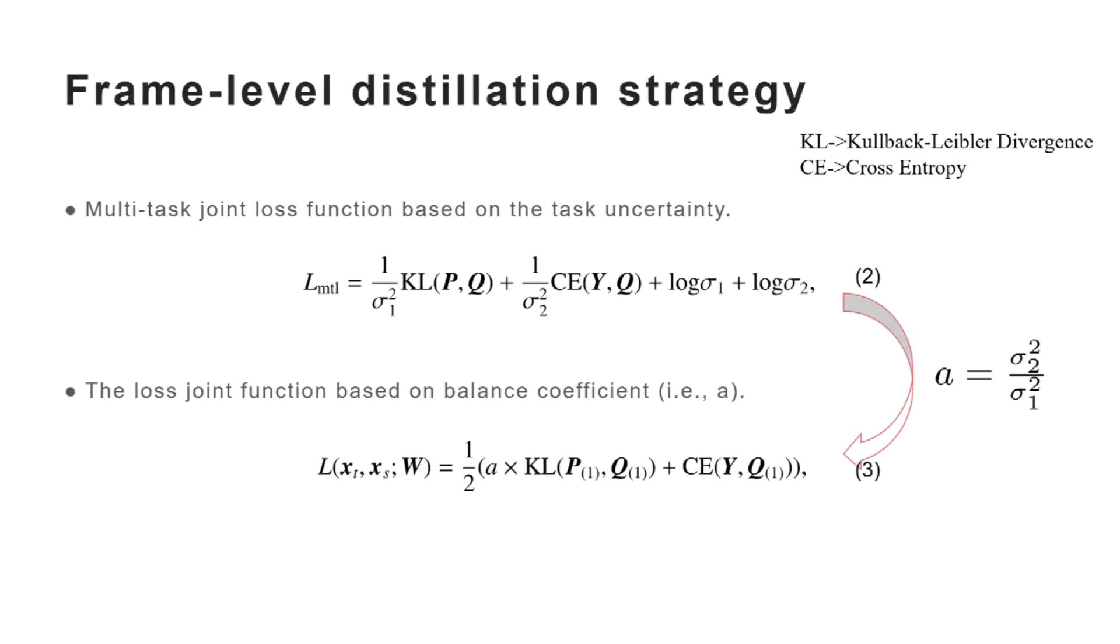Further, to balance the loss gradient between KL and CE, the joint loss function based on balance coefficient a is proposed as equation 3. We obtain a through dividing the square of sigma 2 by the square of sigma 1.